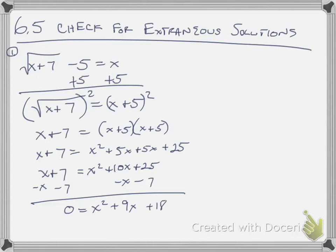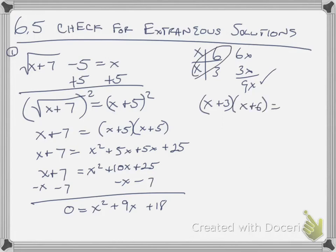So I have x squared plus 9x plus 18. And what you can do now is factor it. I'm going to use the t-chart. If you use the AC method, that's fine. I get 6 times 3 is 18. 6x plus 3x becomes 9x.